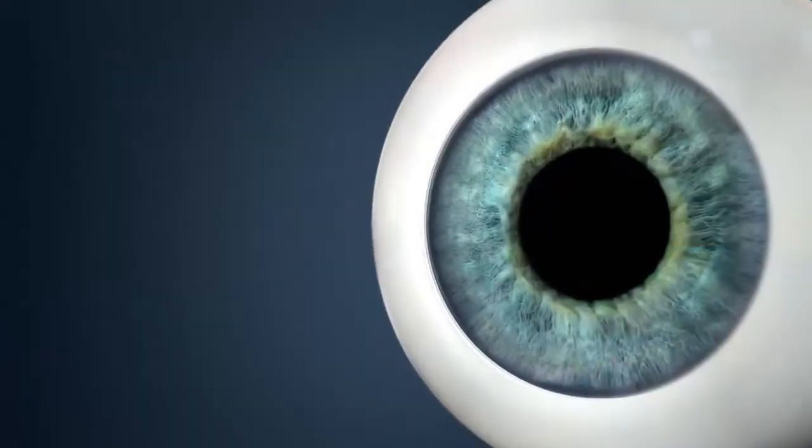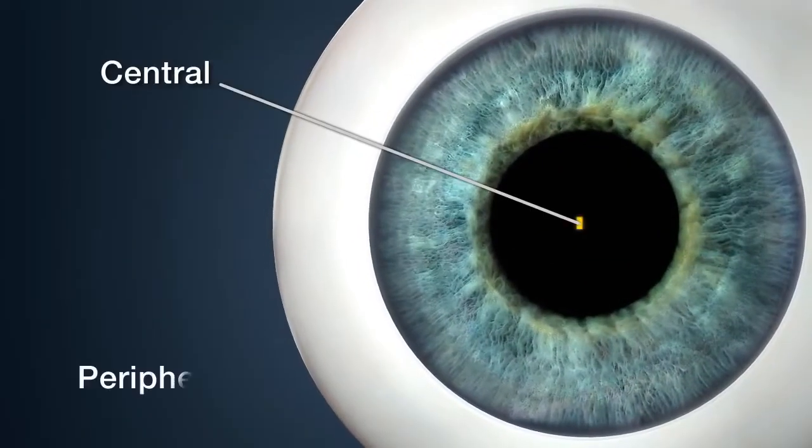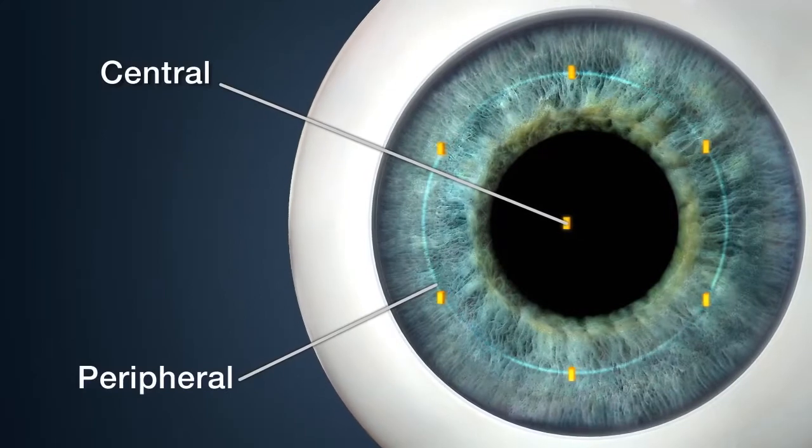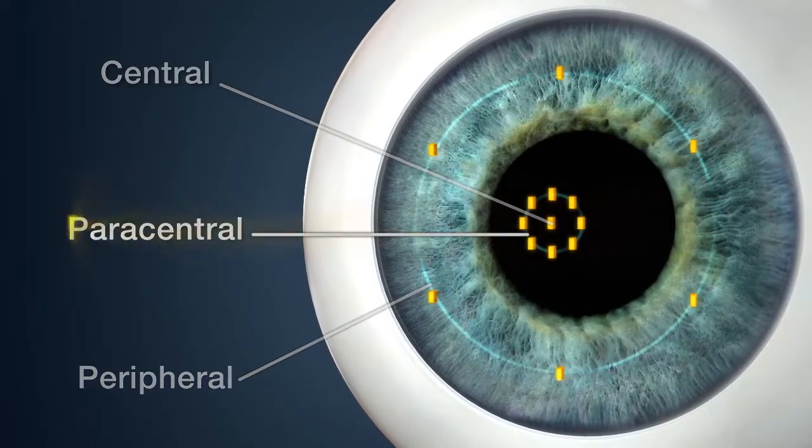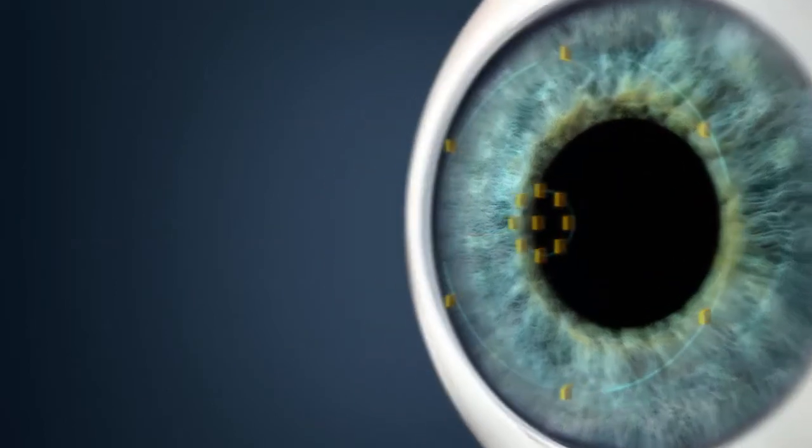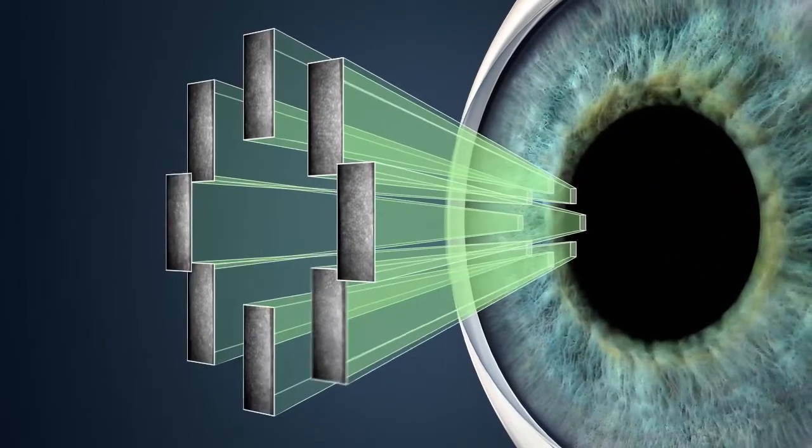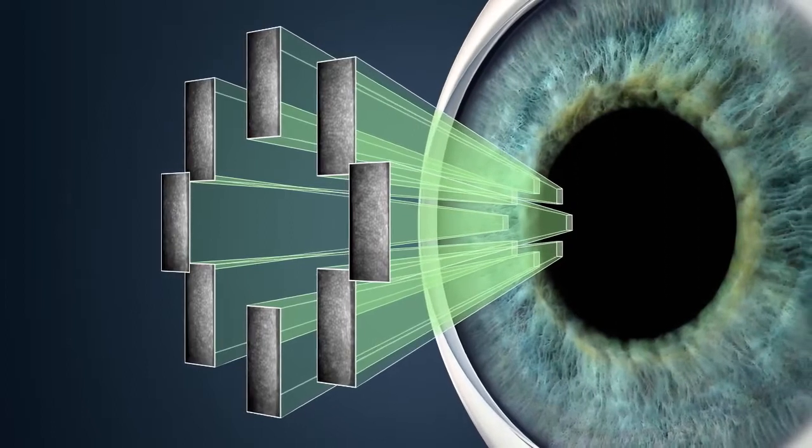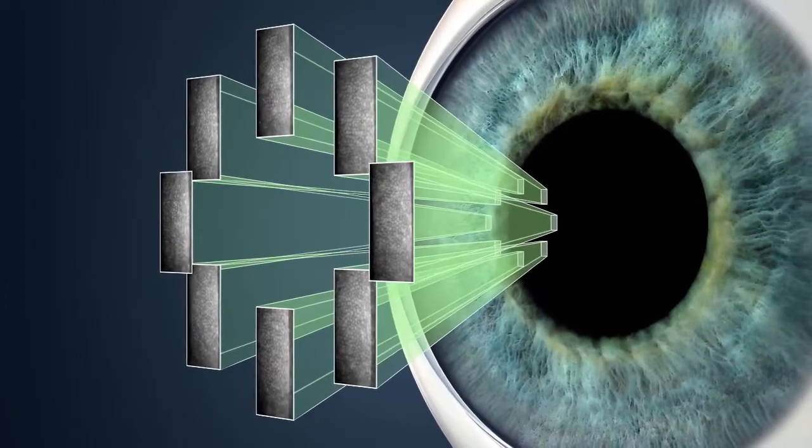While other specular microscopes may have central and peripheral imaging, the CEM530 incorporates paracentral imaging. Paracentral images are captured from 8 points at a 5-degree visual angle for enhanced assessment around the central portion of the cornea.